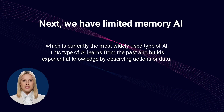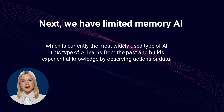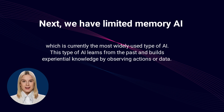Next, we have Limited Memory AI, which is currently the most widely used type of AI. This type of AI learns from the past and builds experiential knowledge by observing actions or data. Autonomous vehicles, for example, use Limited Memory AI to observe other car speed and direction to make predictions and perform complex classification tasks.